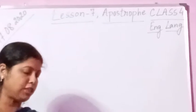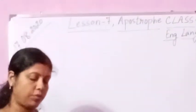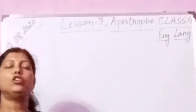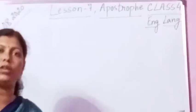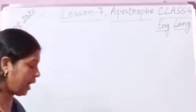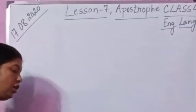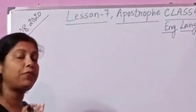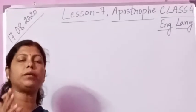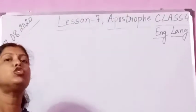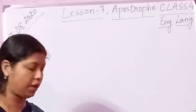Exercise E says: rewrite this paragraph using apostrophes where needed. I am going to write the paragraph on the board using contracted forms only. The meaning of contracted forms is the short forms.